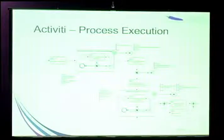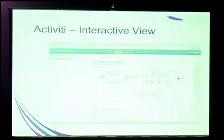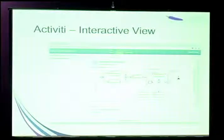It was really easy, for example, to move from only supporting on-demand instances on Amazon to also supporting spot instances. We just created a new branch that started spot instances and published the IDs the same way we'd done with on-demand instances, and the rest of the process worked as expected. Activiti also gives you an interactive view of the process while it's running — you can see where the process is currently executing, what job it's executing, whether it's blocked, and so on.